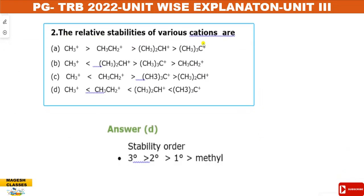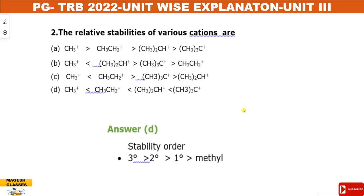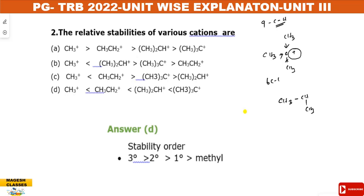Question number 2. The relative stability of various carbocations. We have options: tertiary, secondary, primary, and methyl carbocations. For carbocations, we operate the inductive effect and hyperconjugation effect. In tertiary carbocations, three methyl groups and three carbon-hydrogen hyperconjugation bonds stabilize the charge. In secondary carbocations, there are 6 hyperconjugation bonds. Hyperconjugation and inductive effect both increase stability. The order is: tertiary > secondary > primary > methyl. Most stable is the tertiary carbocation.